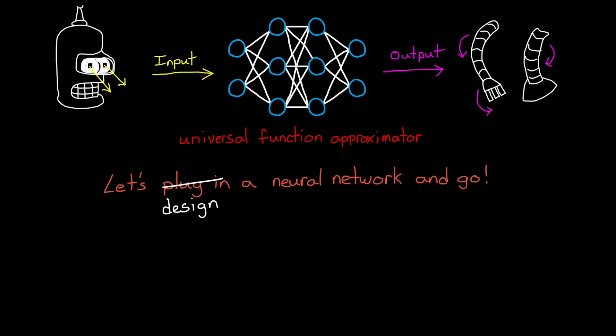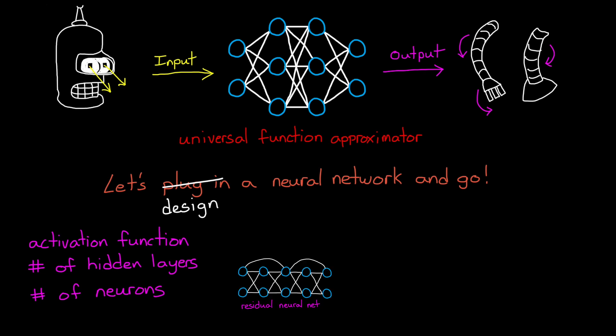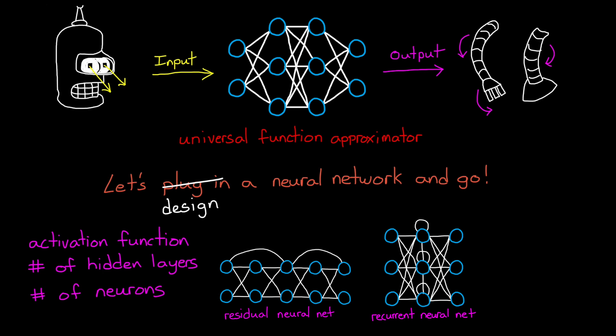For example, as we've already seen, we need to choose an activation function, and the number of hidden layers, and the number of neurons in each layer. But beyond that, we also have control over the internal structure of the network. Should it be fully connected like the network I've drawn, or should the connection skip layers like in a residual neural network? Should they loop back on themselves to create internal memory with recurrent neural networks? Should groups of neurons work together like with a convolutional neural network? And so on. We have a lot of choices, but as with other control techniques, there isn't one right approach. A lot of times it comes down to starting with a network structure that has already worked for the type of problem you're trying to solve, and then just tweak it from there.